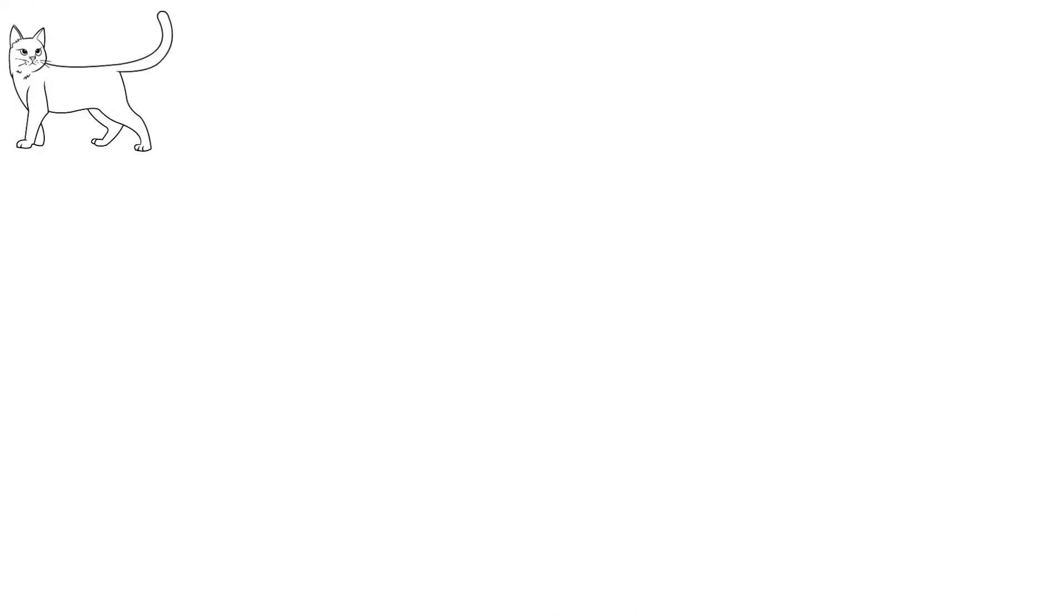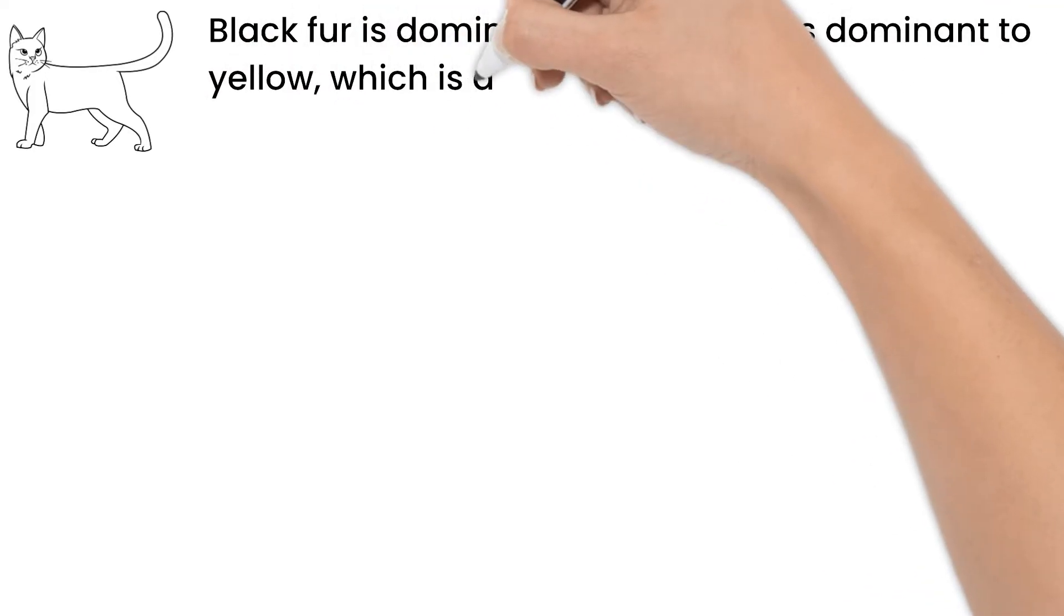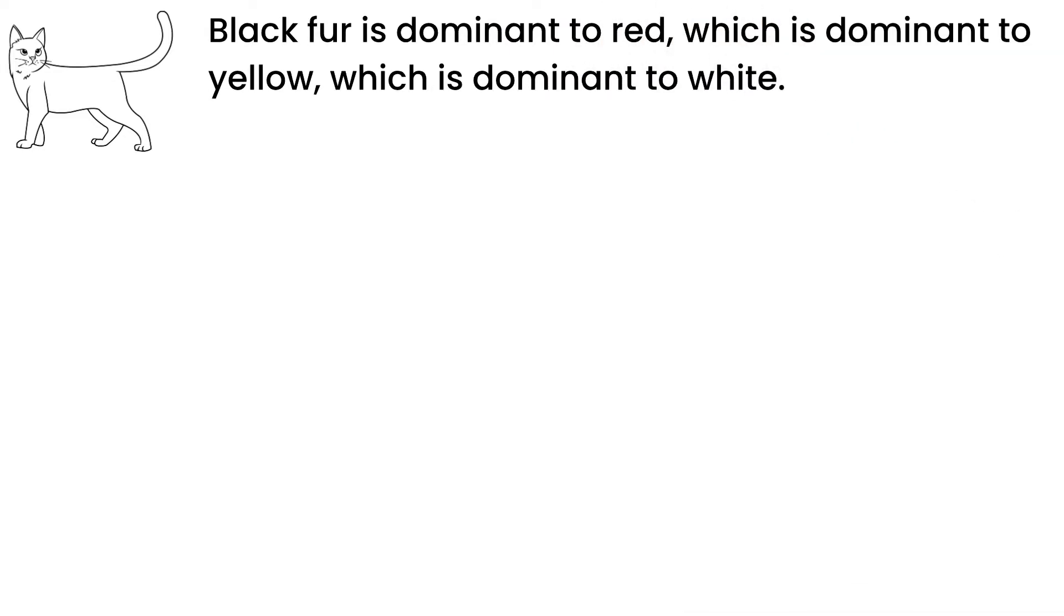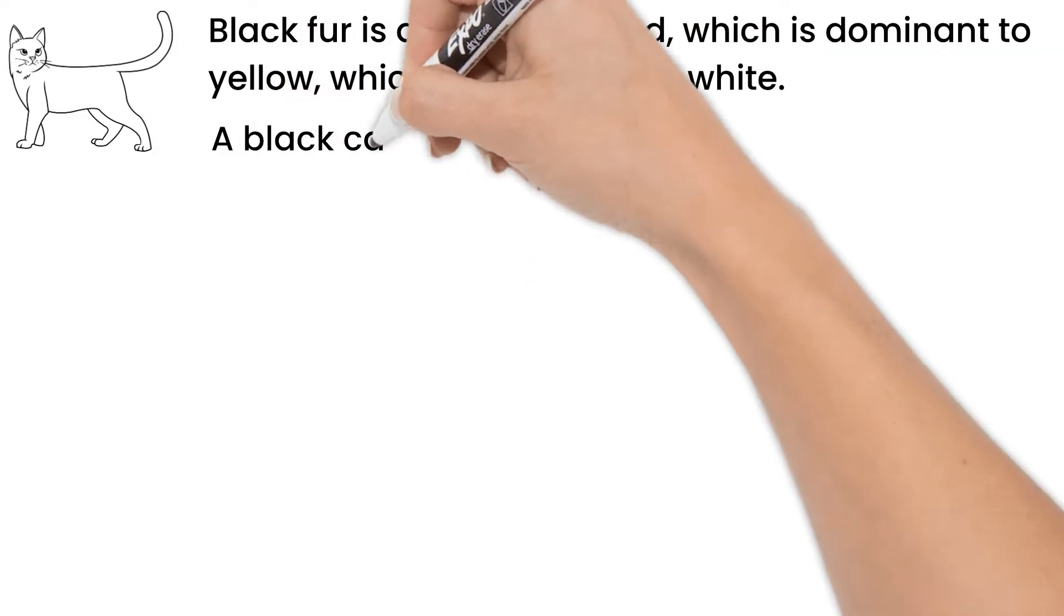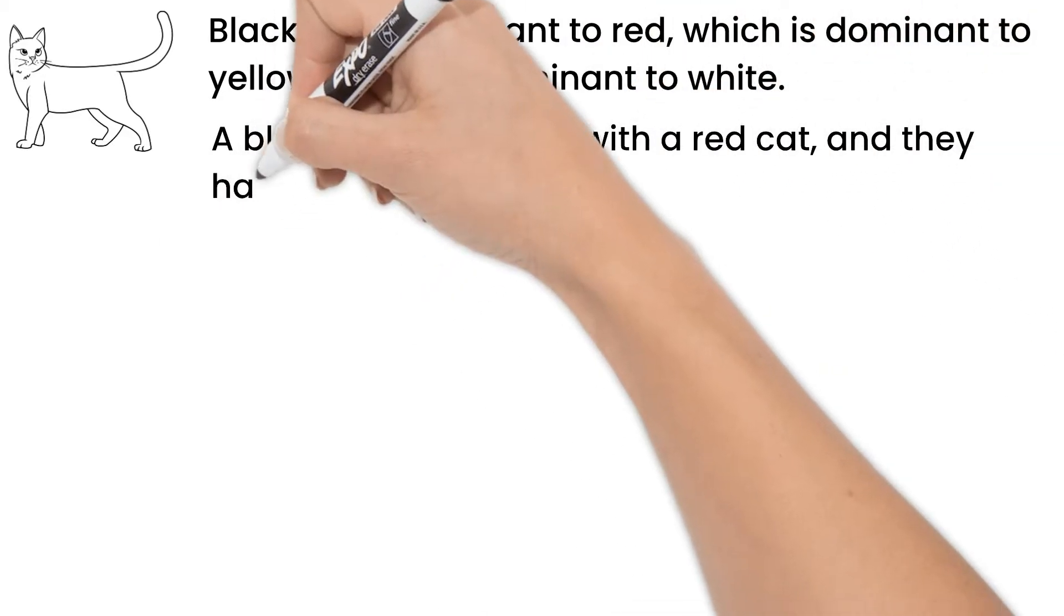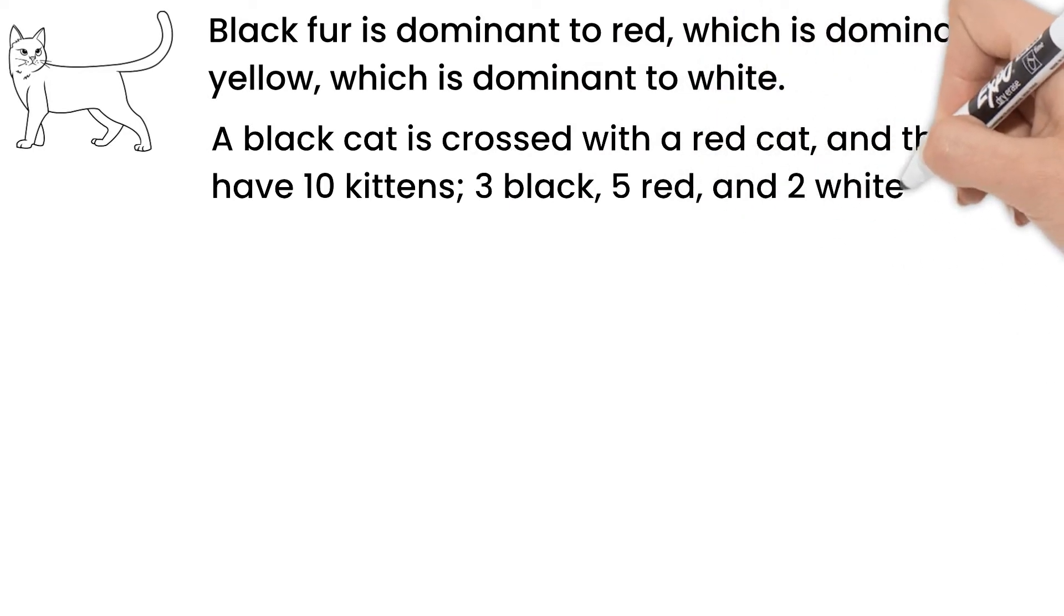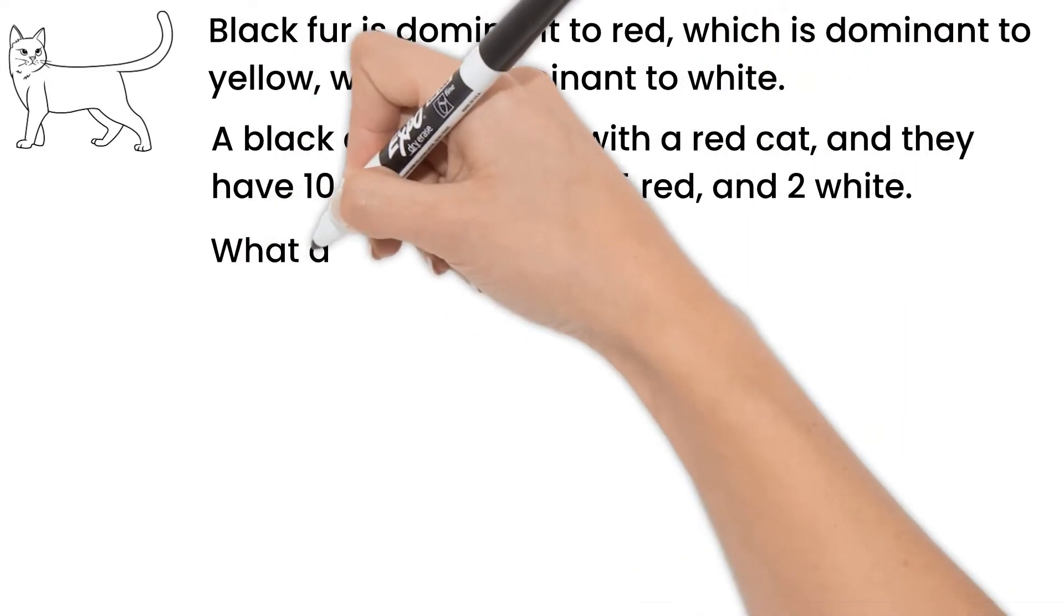Cats can have lots of different colors of fur. To simplify our example, we'll just use four colors. Let's say black fur is dominant to red, which is dominant to yellow, which is dominant to white. A black cat is crossed with a red cat, and they have ten kittens: three black, five red, and two white. What are the genotypes of the parents?